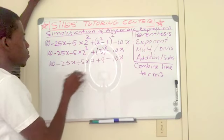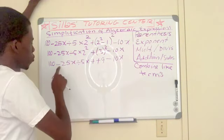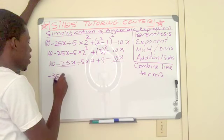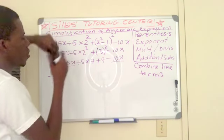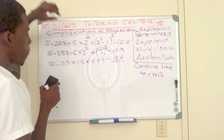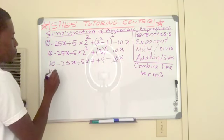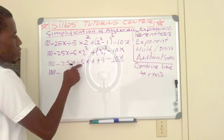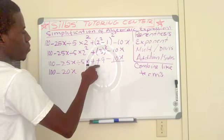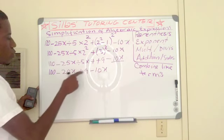I have to do multiplication and division first. 25 divided by 5 is 5; 5 times 4 is 20. So that gives me 100 minus 20X plus 9 minus 10X.